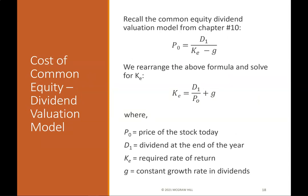Cost of common equity — dividend valuation model: Recall the common equity dividend valuation model from Chapter 10: P = D / (K − G). Rearranging and solving for K gives K = D / P + G, where P is the price of the stock today, D is the dividend at the end of the year, K is the required rate of return, and G is the constant growth rate in dividends.